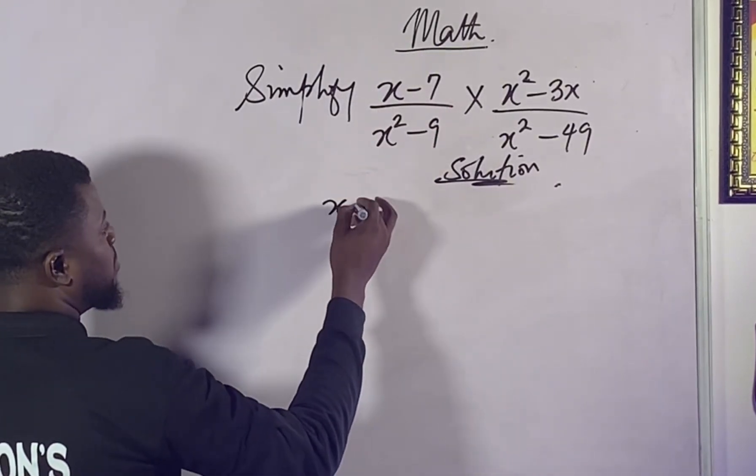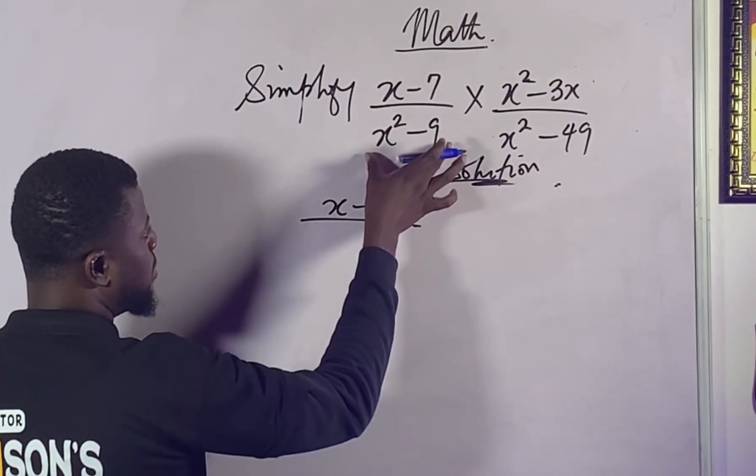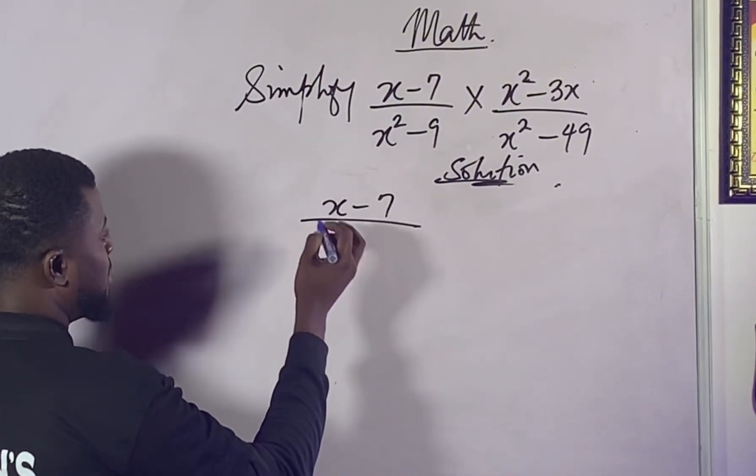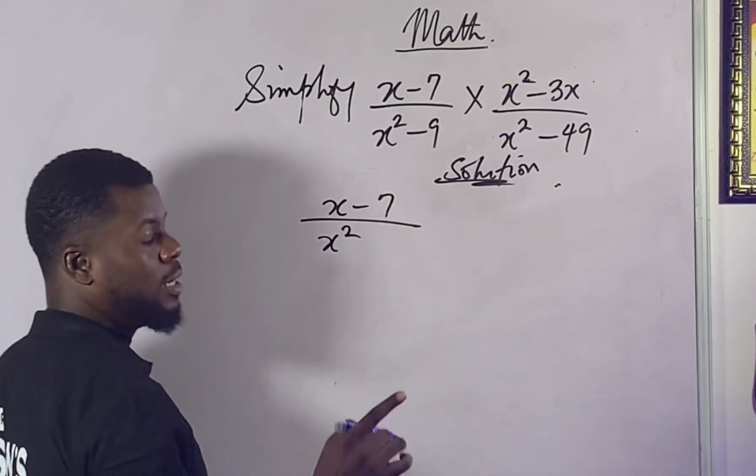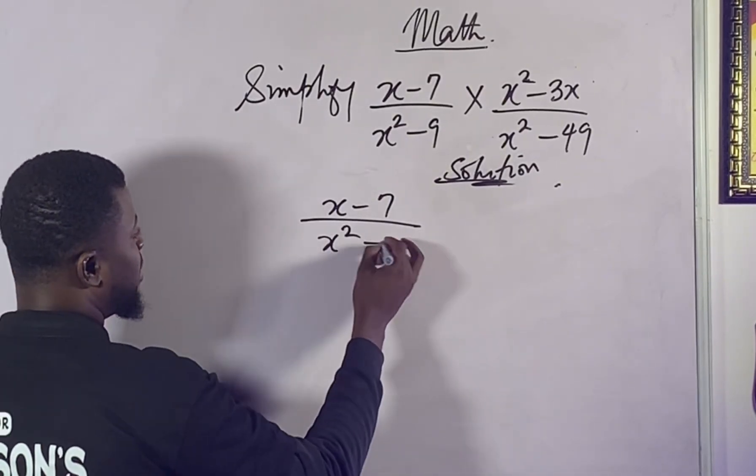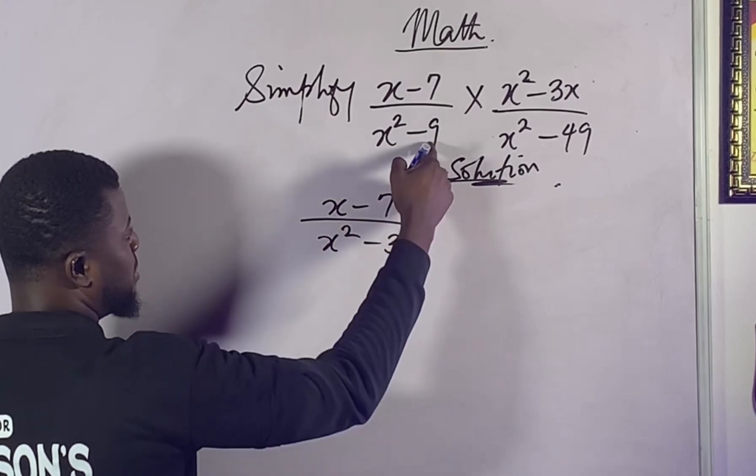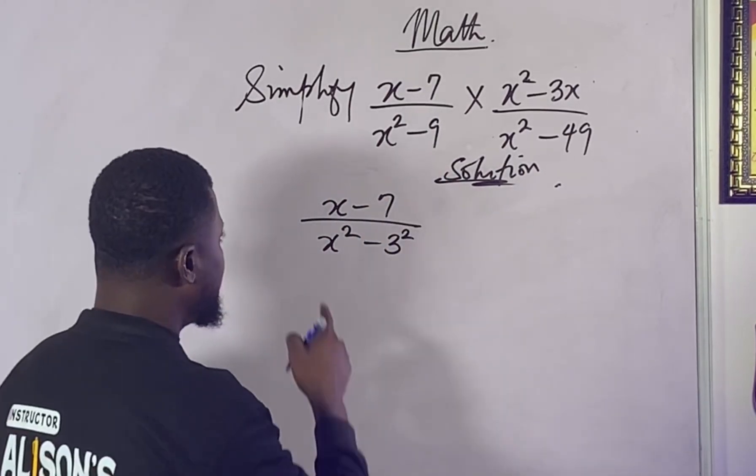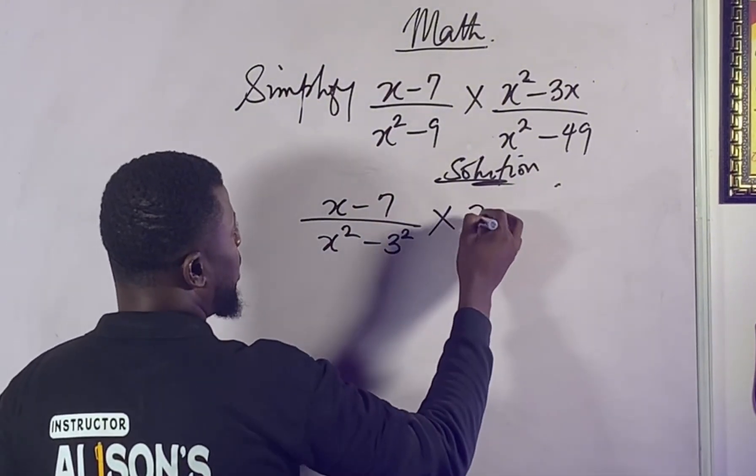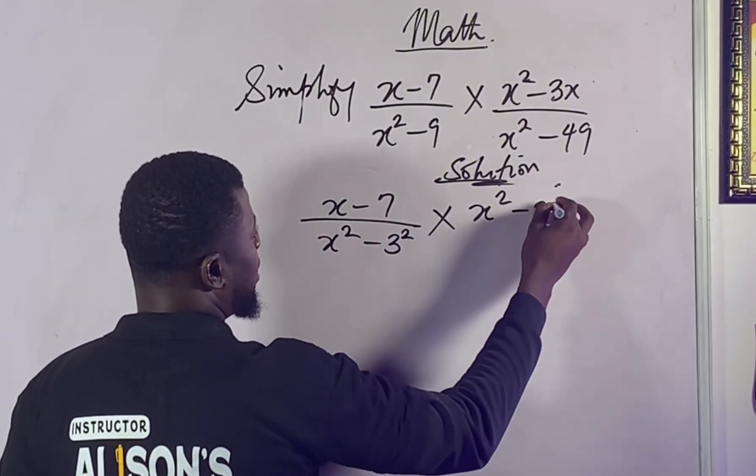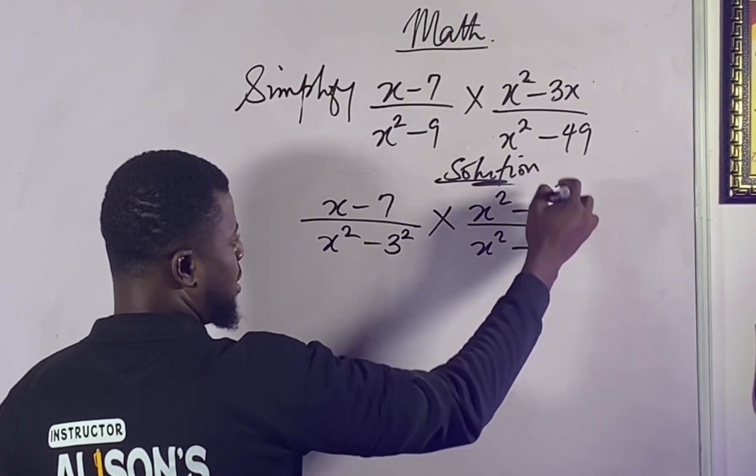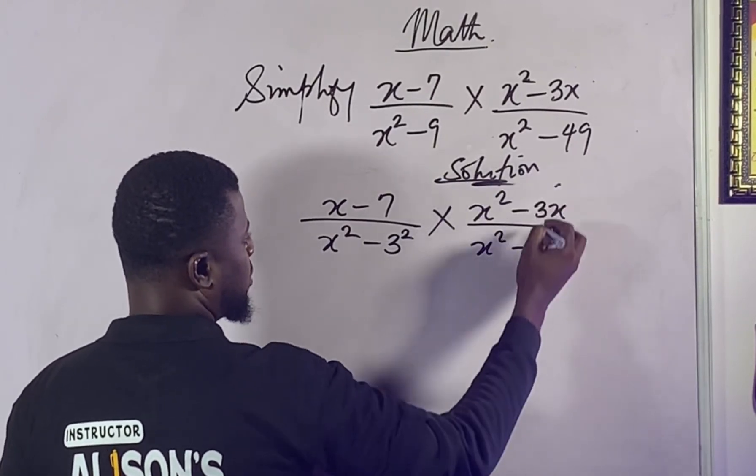Here we have x minus seven over here is difference of two squares, so that means I can easily reduce it to this. Let me take it step by step so that you don't have problems with that. Three squared is nine, x squared is this, so I've not done any magic. So x squared minus 3x over x squared minus... I think seven squared should give us 49.